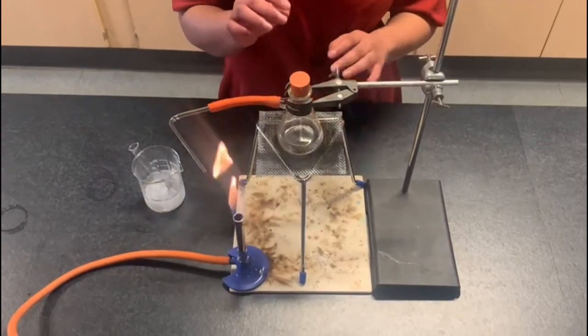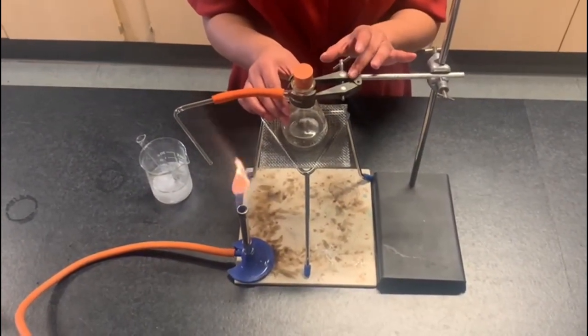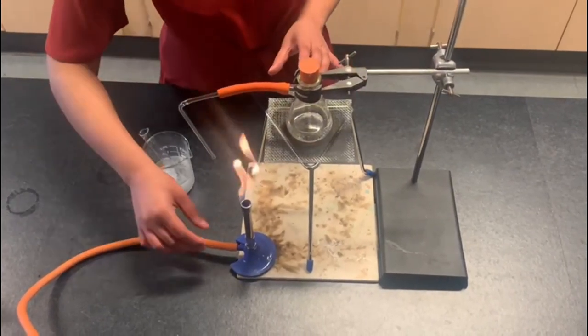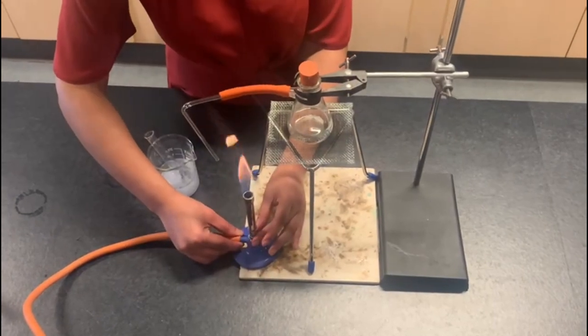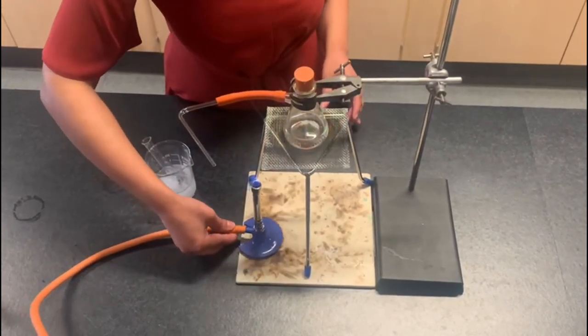We've just placed the bung on top of the conical flask and secured the neck of the conical flask with a clamp just so it does not move. We will then change the flame to the roaring flame and place it underneath the conical flask.